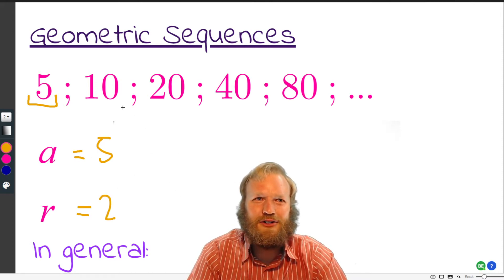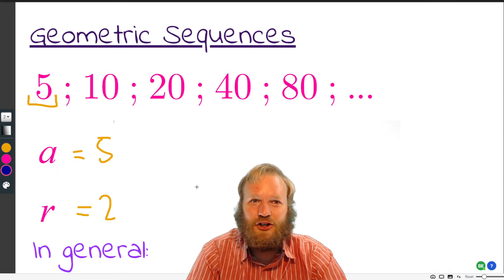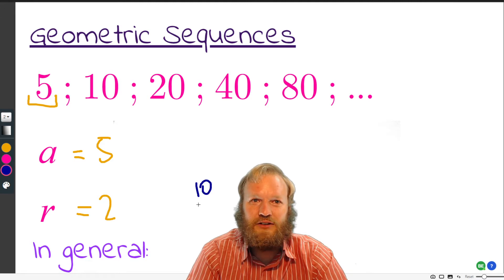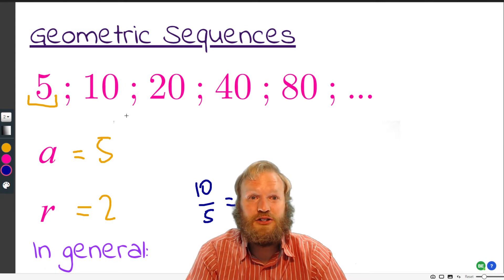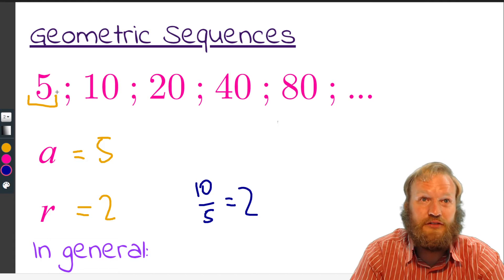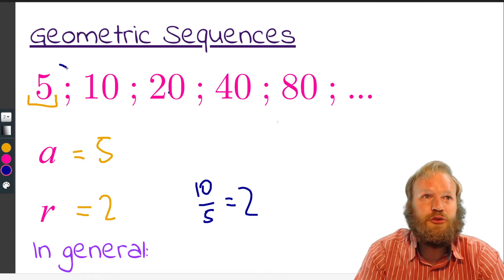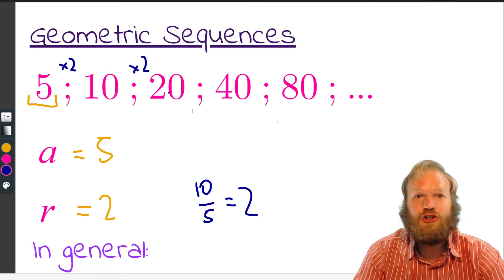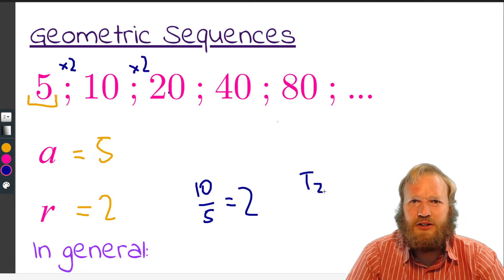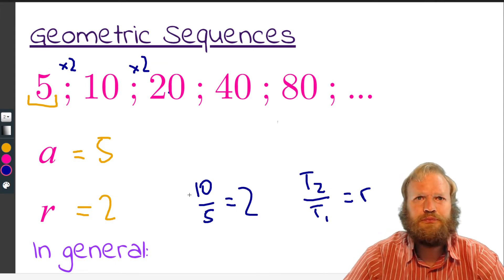And let's see how we could work that out quite systematically. We could take the second term. So if we took 10 and we divided it by 5, we can see what we're multiplying by. So 10 over 5 is 2. 20 over 10 is 2. 40 over 20 is 2. So in other words, you're multiplying by 2 each time. So you'll sometimes see maybe T2 over T1. Well, that's the value of R. One term divided by the term just before it.